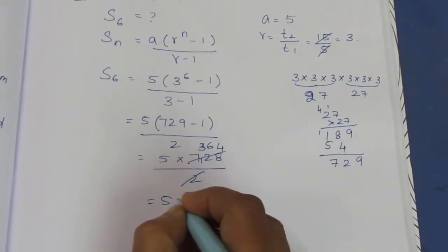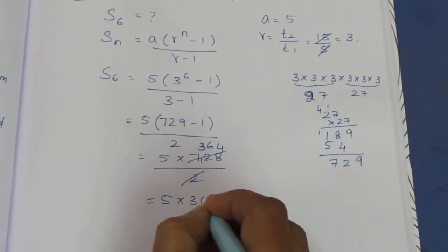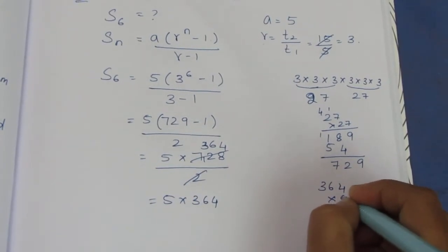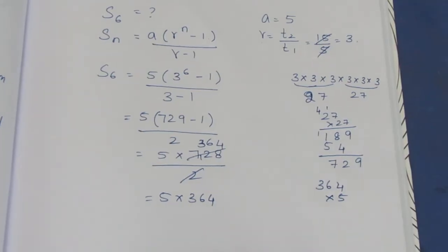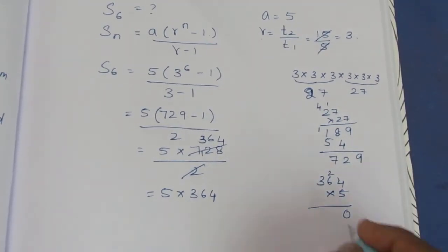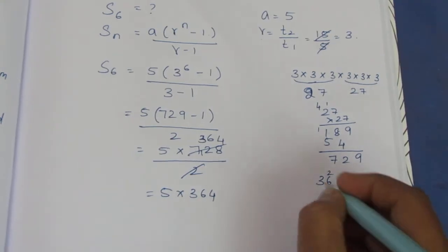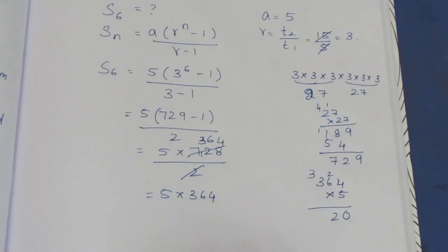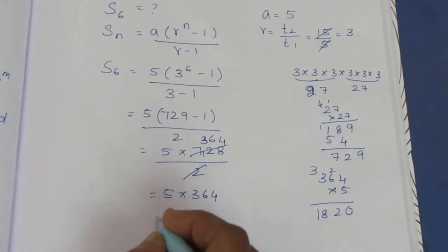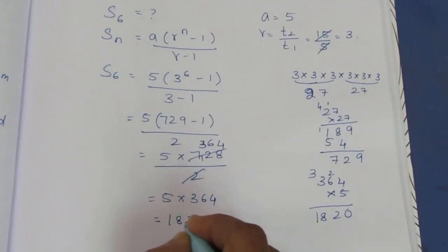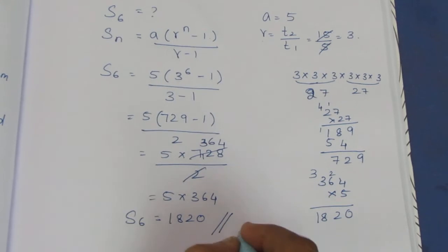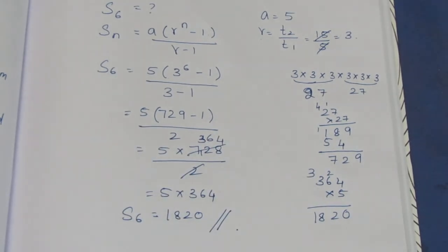5 × 364: 5 × 4 = 20, 5 × 6 = 30 plus 2 is 32, 5 × 3 = 15 plus 3 is 18. So the result is 1820. That is the sum of the 6 terms of the given GP.